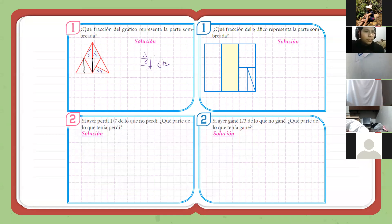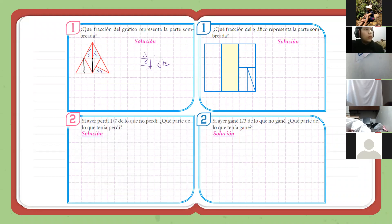La idea va a ser que encuentren qué parte está pintado del total. Si el total no está dividido en partes iguales, habrá que dividirlo en partes iguales. Nada más. Problemita número dos: si ayer perdí un séptimo de lo que no perdí, ¿qué parte de lo que tenía perdí?